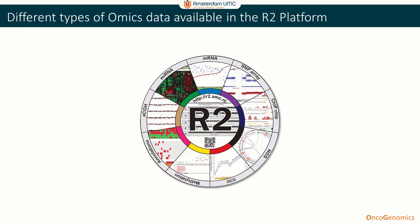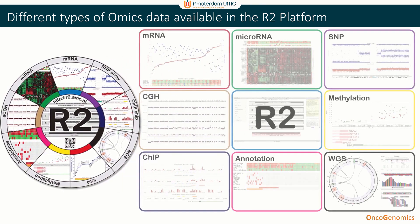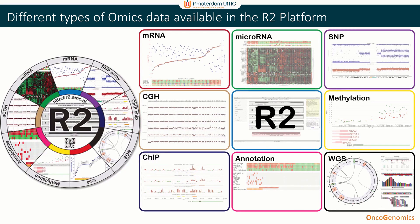Next to a wide array of transcriptome data, other types of omics data are also available in R2. These range from microRNA, SNPs, copy number, and methylation data, up to whole genome or whole exome NGS data for experiments and/or cohorts. ChIP data is also available for analysis.